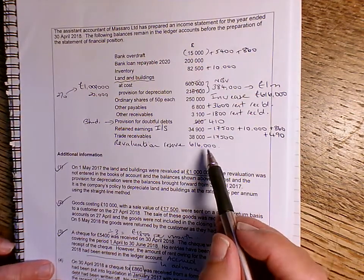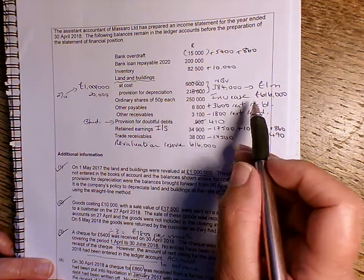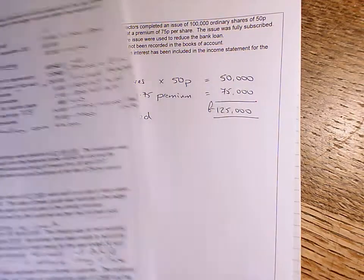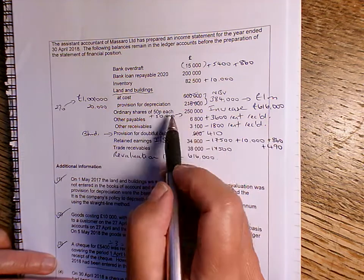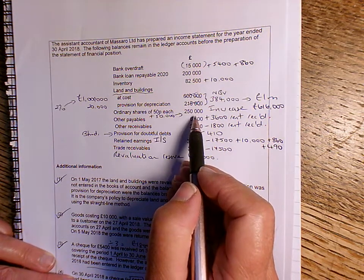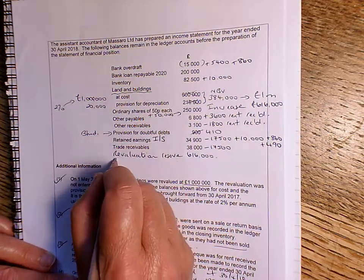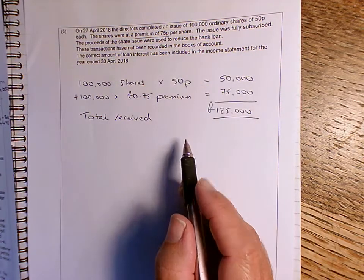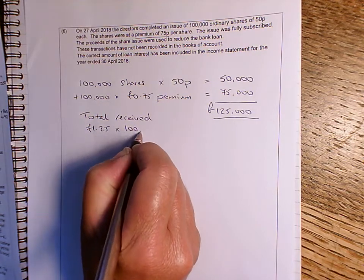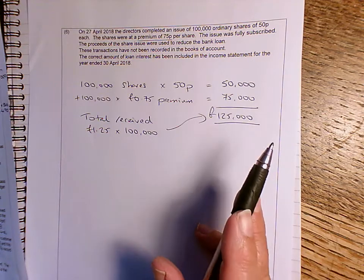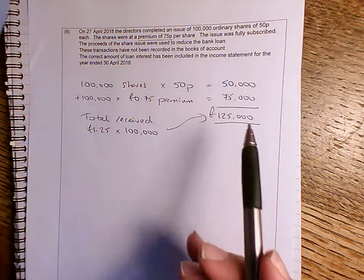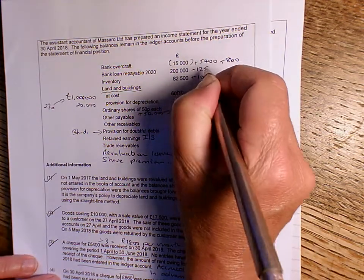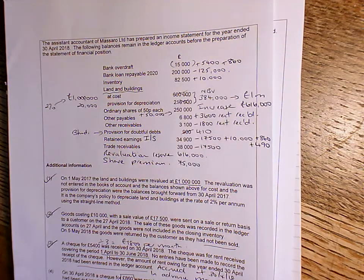So when we come to do the statement of financial position, we're going to add to ordinary share capital. We had £250,000, and we're going to add to that 100,000 shares at 50p each. So that's going up by £50,000. So we're now going to have £300,000 in ordinary share capital. And then the share premium, we didn't have a share premium before looking at this list. So we've got a share premium, which if you remember was 100,000 shares times the 75p premium. So the total amount these shares have been sold for is £1.25 times £100,000. Ordinarily, that will be paid into the bank. But we're told here that that money has been used to reduce the bank loan. So we can take that £125,000 off the bank loan. So we've got to put £75,000 into the share premium, and then we're going to reduce the bank loan by £125,000.